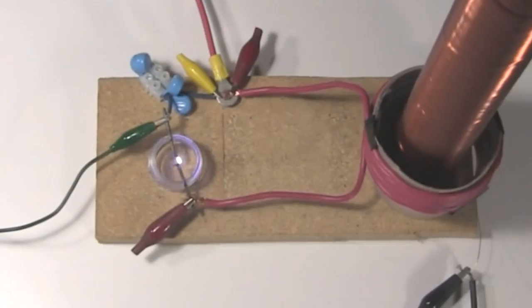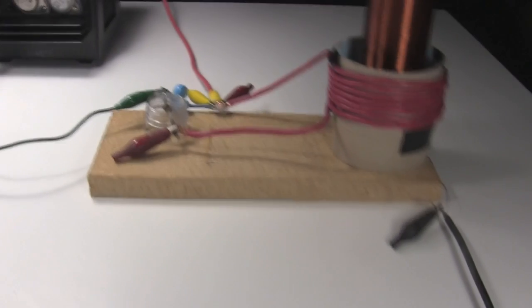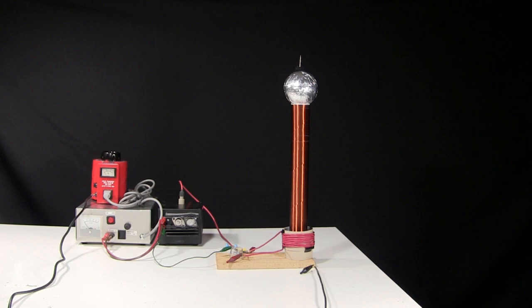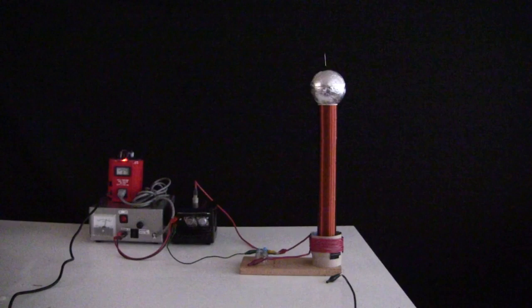The primary circuit consists of these capacitors, this spark gap, and this coil. The secondary circuit consists of this much longer coil and this metal ball on top, called the top load. And that's all!